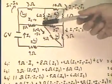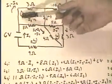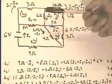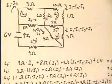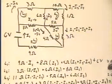And then we have the I2 going the wrong way. The loop goes this way, I2 is going this way, so it's going to be negative I2 times the eight ohms. And all that has to add up to zero.